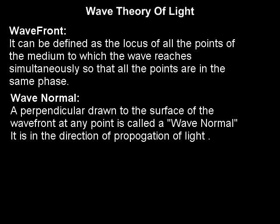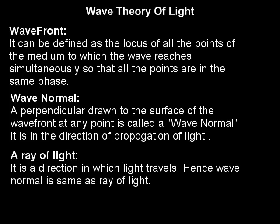Wave normal: a perpendicular drawn to the surface of the wavefront at any point is called a wave normal. It is in the direction of propagation of light at that point. A ray of light is the direction in which the light travels. Hence, wave normal is the same as a ray of light.